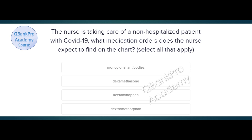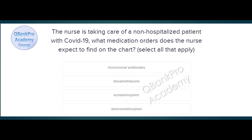A nurse is taking care of a non-hospitalized patient with COVID-19. What medication orders does the nurse expect to find on the chart? Select all that apply. Monoclonal antibodies, dexamethasone, acetaminophen, dextromethorphan. The correct answer is monoclonal antibodies, acetaminophen, and dextromethorphan.